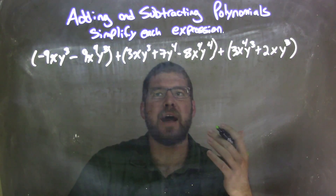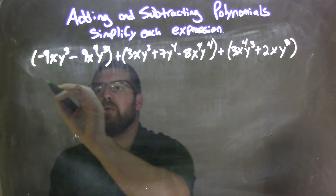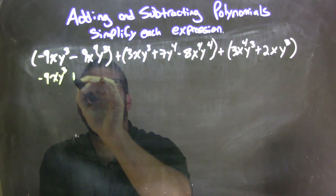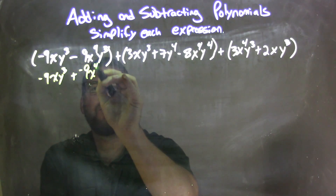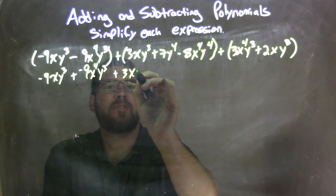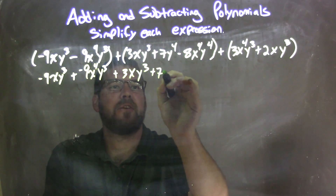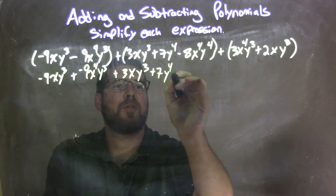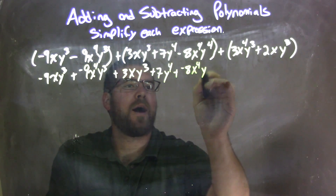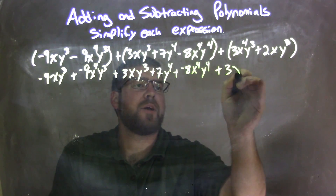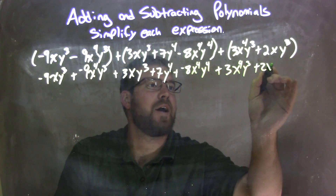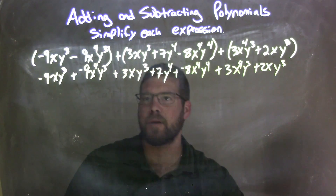So now all my subtractions, I'm going to do adding a negative. So we have negative 9xy to the third, plus a negative 9x to the fourth y to the third, plus 3xy to the third, plus 7y to the fourth, plus a negative 8x to the fourth y to the fourth, plus 3x to the fourth y to the third, plus 2xy to the third.